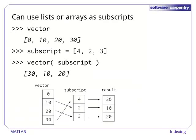For more sophisticated indexing operations, we can use an array as a set of subscripts. For example, here's our four-element vector again, and a list with three legal subscripts 4, 2, and 3. The expression vector subscript gives a new array whose elements are selected from vector as you'd expect.